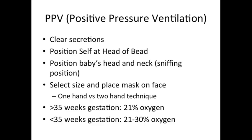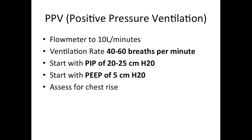Position the baby's head and neck in sniffing position. Select the appropriate size mask and place the mask on the face. For infants greater than 35 weeks gestation, FiO2 can be set to 21%. For infants born at less than 35 weeks gestation, FiO2 should be set between 21 and 30%. Set the flow meter to 10 liters per minute. Ventilation should be done at a rate of 40 to 60 breaths per minute, starting with a PIP of 20 to 25 cm H2O and a PEEP of 5 cm H2O.